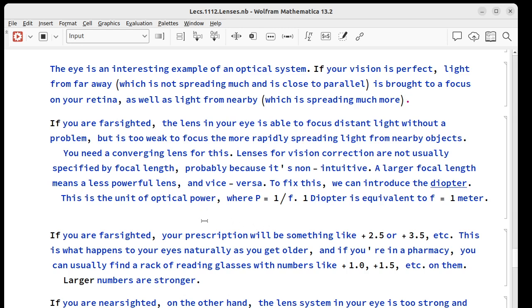If you're farsighted, that means you can see things that are far away. And that means you can see there, but not close up. Close up where there's more spreading, your lens is basically too weak to focus that more rapidly spreading light onto your retina. It would bring it to a focus somewhere inside your brain if it could get there. You need a converging lens to fix this, to bring that spreading back under control.